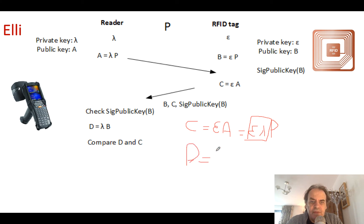And these two values should be the same because we can multiply in any order. So we end up with epsilon lambda P, and they should be the same.